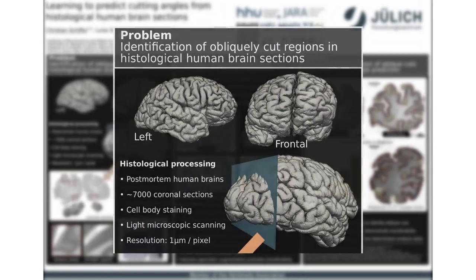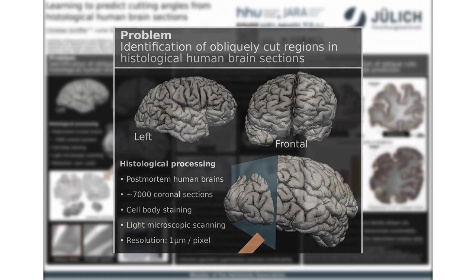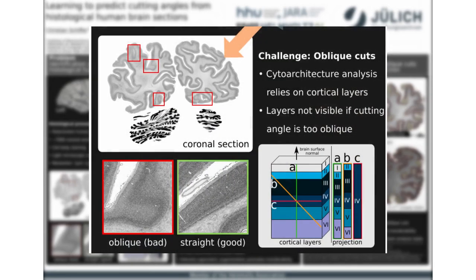In this work we tackle the problem of identifying obliquely cut regions in histological human brain sections. Cutting an adult human brain results in about 7000 coronal sections, which are then cell body stained and scanned using a light microscope at a resolution of one micrometer per pixel. Resulting images can be used to analyze the cellular architecture of the brain.